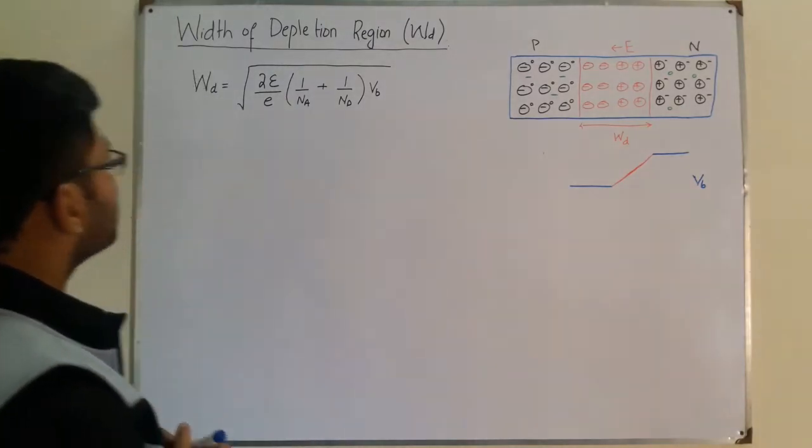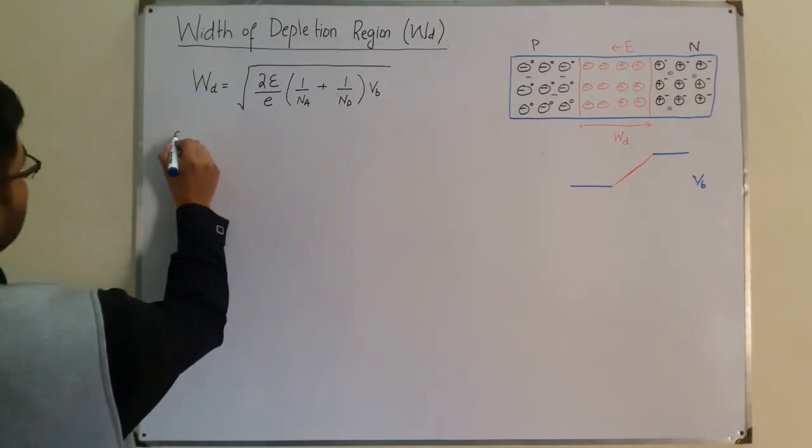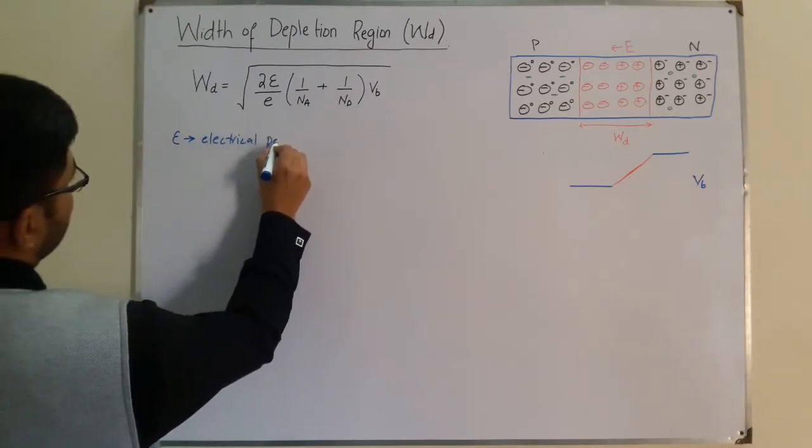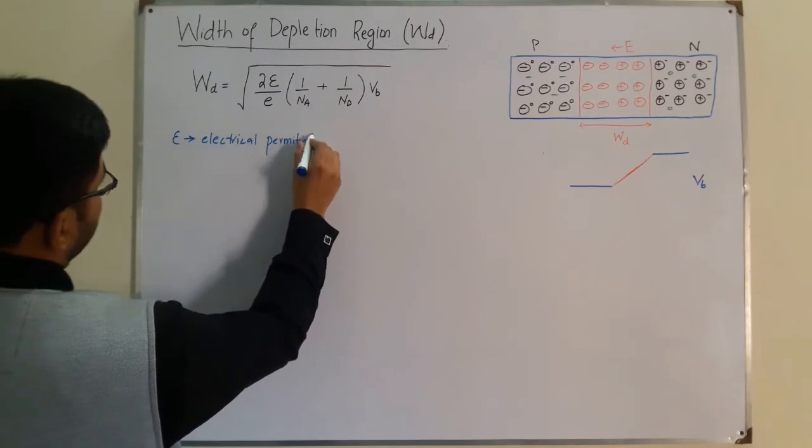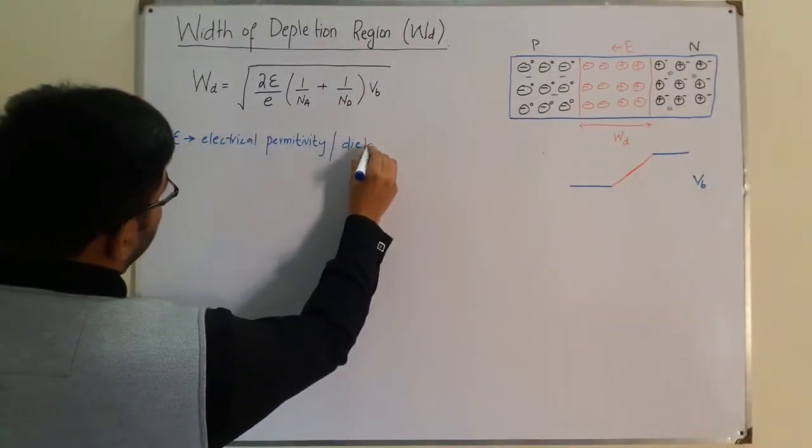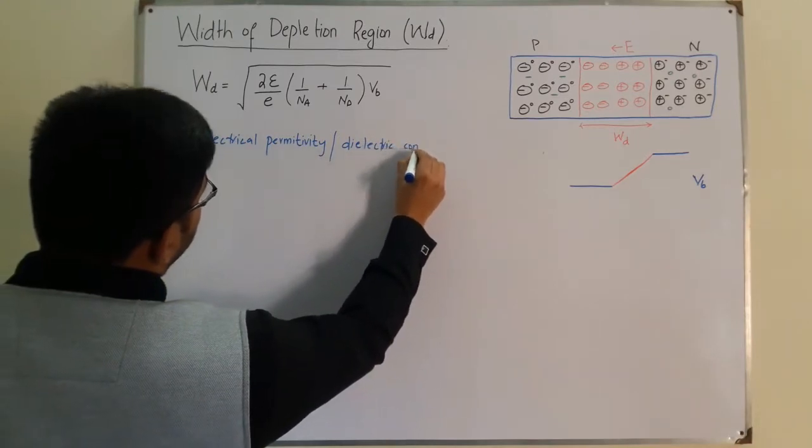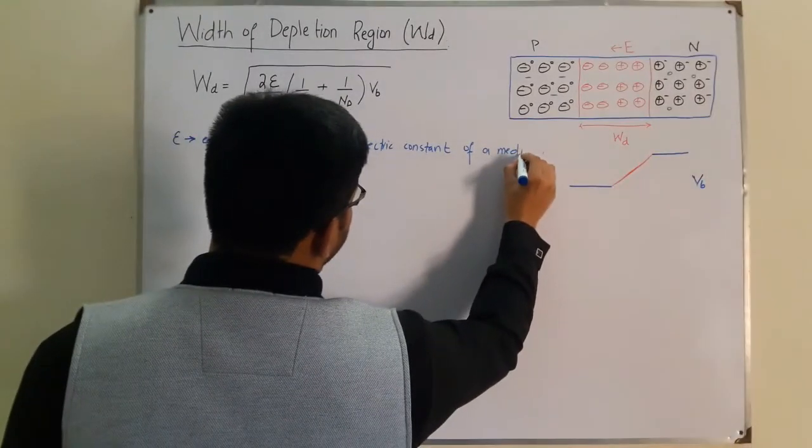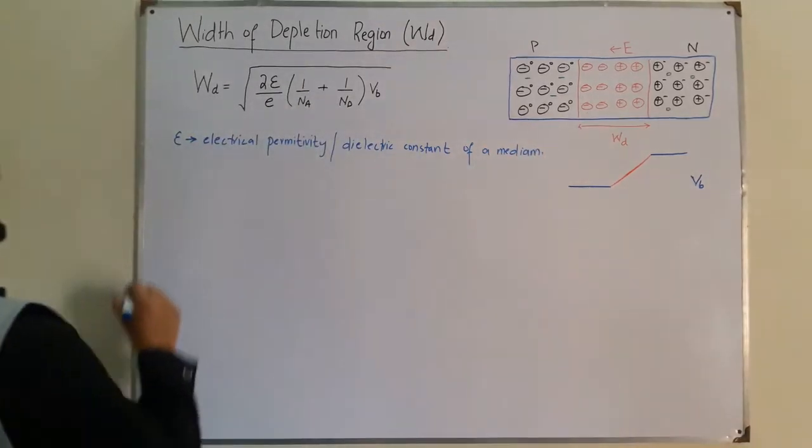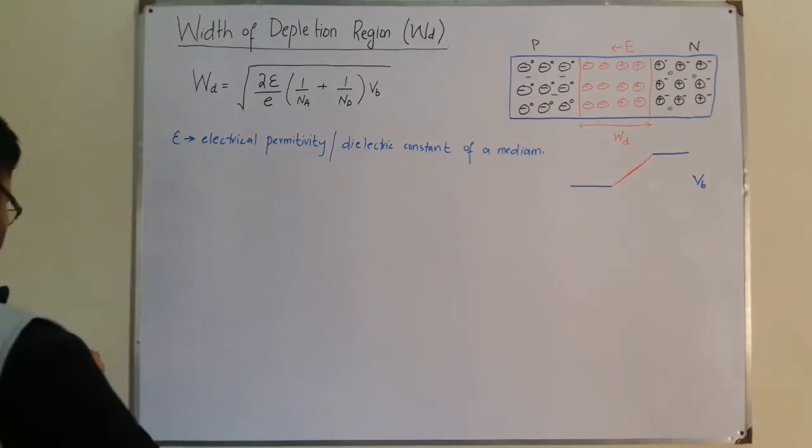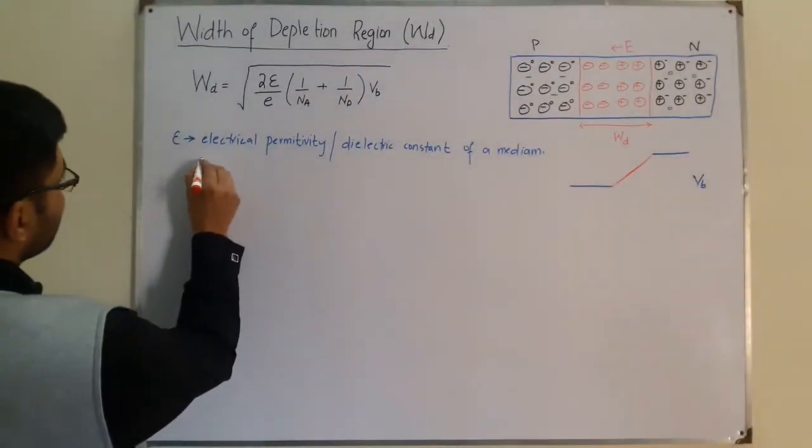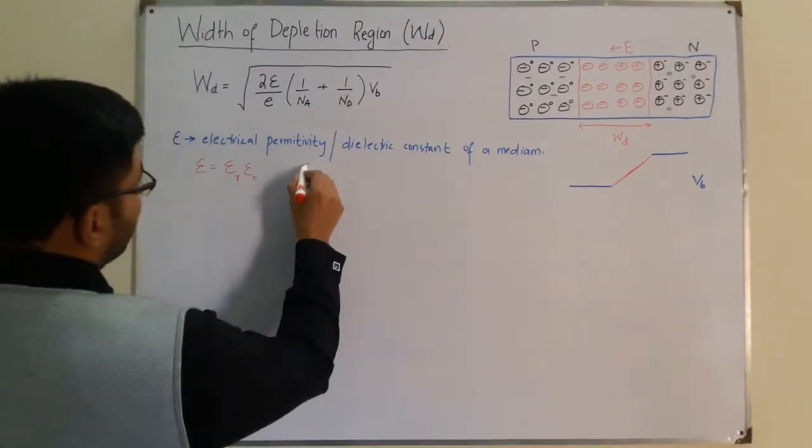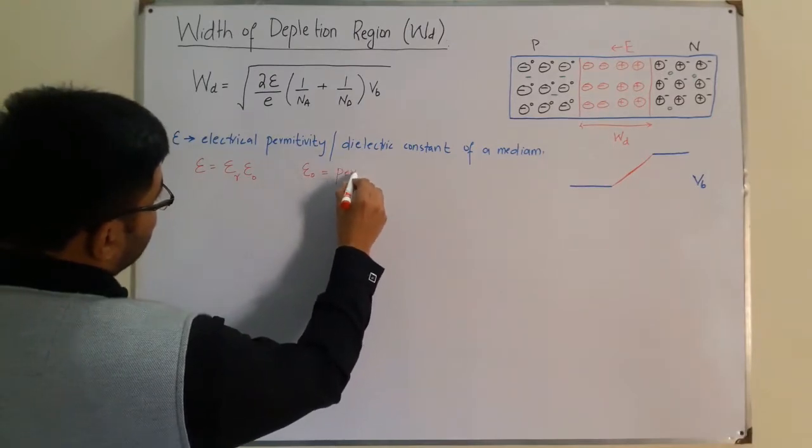Now the terms associated: epsilon is the electrical permittivity, also called dielectric constant, and this is different for every medium. This epsilon is equal to epsilon r times epsilon naught.